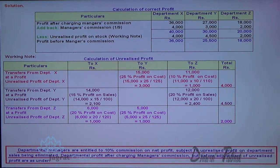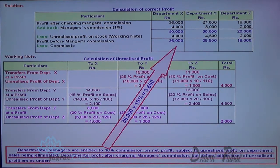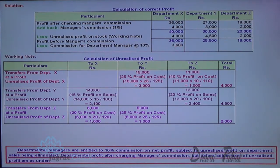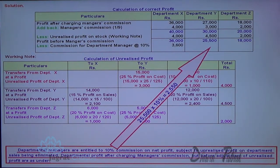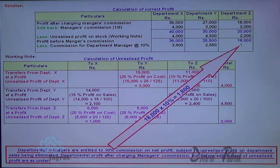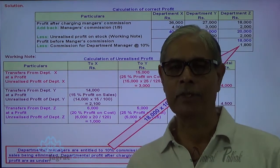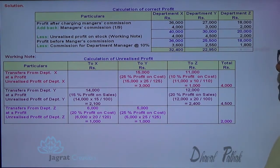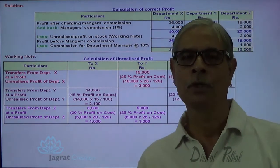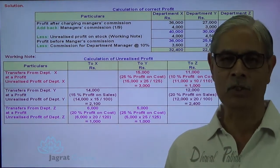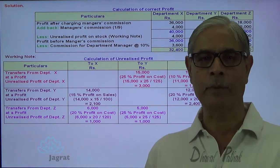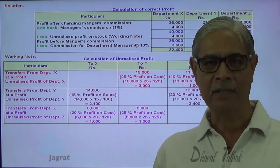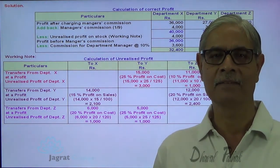On this true profit, we apply 10% commission: 36,000 × 10% = 3,600 for X; 25,000 × 10% = 2,550 for Y; and 18,000 × 10% = 1,800 for Z. We then deduct this commission to get the true profit after commission. This is how this sum gets solved. I have tried to explain this sum and I feel that you have followed all these things. Thanks.